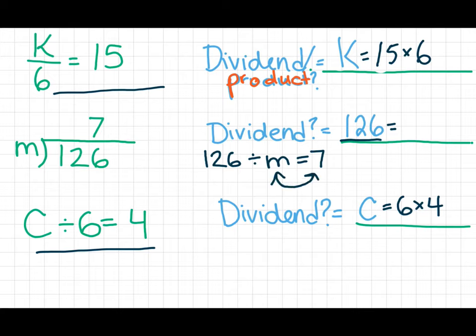So if 126 divided by M equals 7, then all I have to do, because this is a fact family, is swap these. So 126 divided by 7 will equal M.